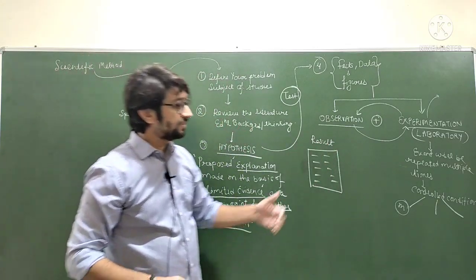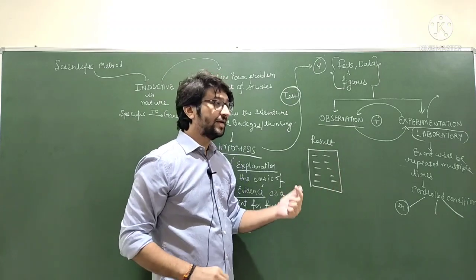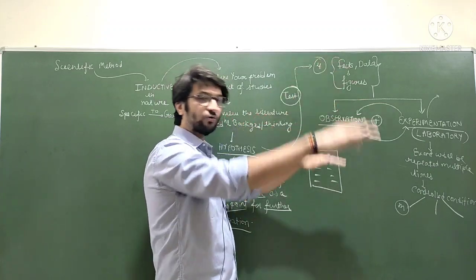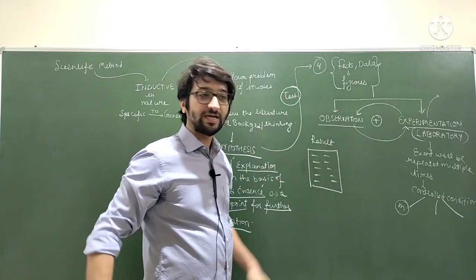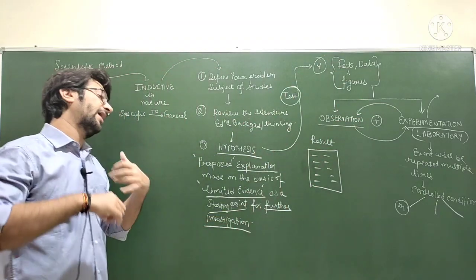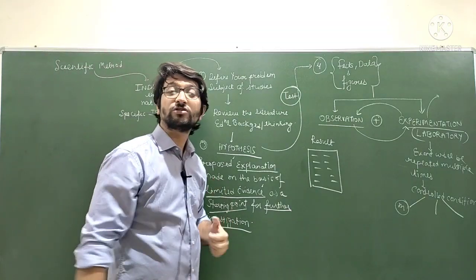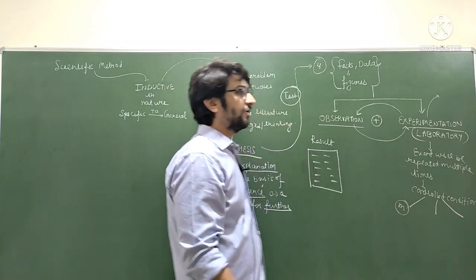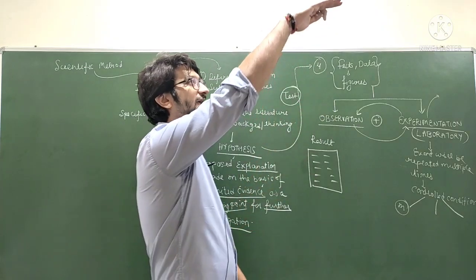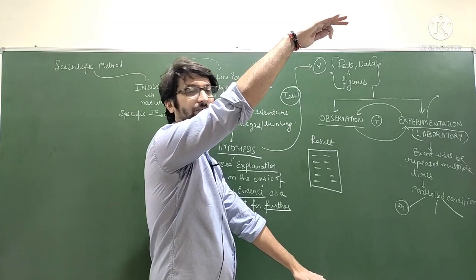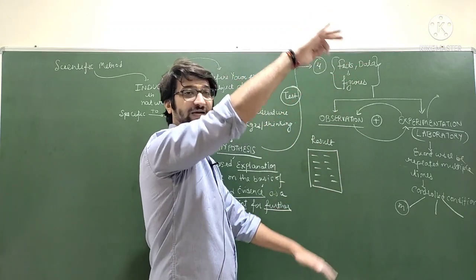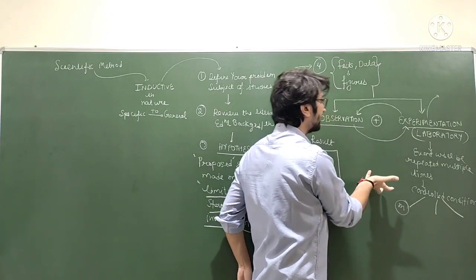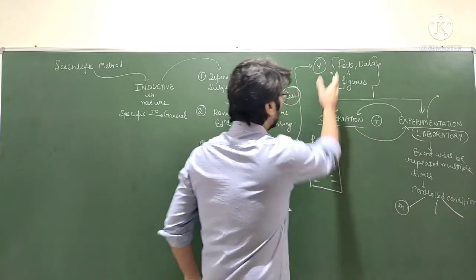Multiple variables will be changed, repeated experimentation will be done, and observations will be recorded. Facts, data, and figures will be collected and tabulated. Observation involves the use of senses. Since human senses are limited, humans create various observation instruments to enhance their observational power. For example, Galileo modified and effectively used the telescope to observe planetary motions, and through multiple observations — changing various variables — he was able to conclude that it is not the sun that revolves around the earth but the earth that revolves around the sun, supporting the heliocentric theory of Copernicus.